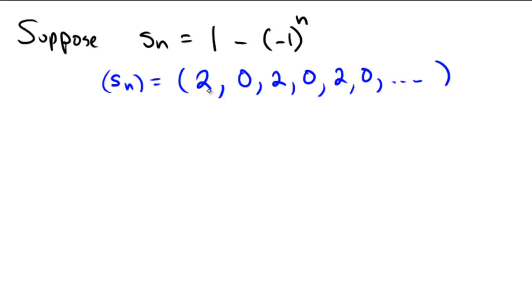But, on the other hand, the first term, the third term, the fifth term are all 2's, and the second term, fourth term, and sixth term are all 0's.